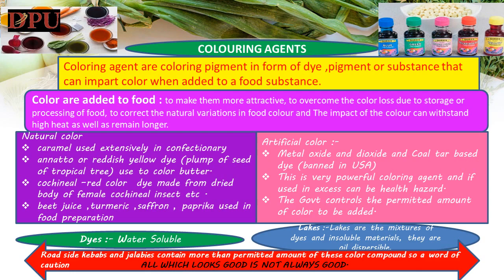3. Cochineal, a red color dye made from the dried body of the female cochineal insect. 4. Beet juice, turmeric, saffron, paprika used in food preparation. Artificial colors are produced synthetically to dye and enhance most foods and beverages. Also known as certified colors, artificial color additives must be approved by the FDA. They are used far more often than natural colors in the food industry, due to lower cost, longer shelf life and higher reliability than natural dyes. Only 7 straight synthetic colors are approved by the FDA for use in food, all associated with a number.